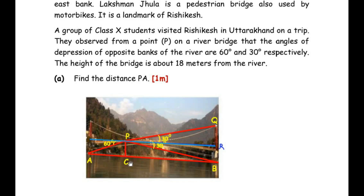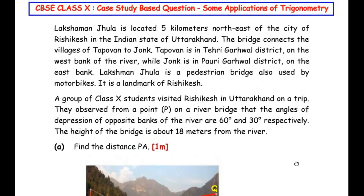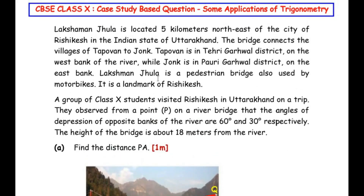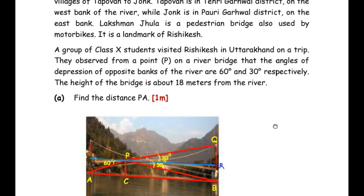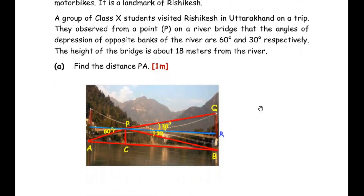The height of the bridge is about 18 meters from the river. The first question is: find the distance PA. Point A represents one bank of the river and point B represents the opposite bank. When looking down at point A, the angle of depression is 60 degrees, and when looking down at the opposite bank B, the angle of depression is 30 degrees.